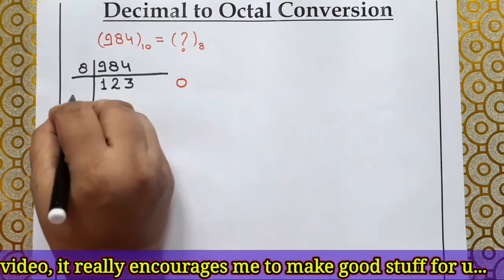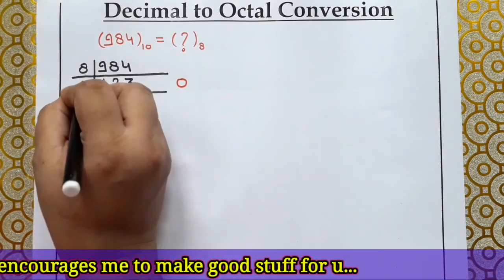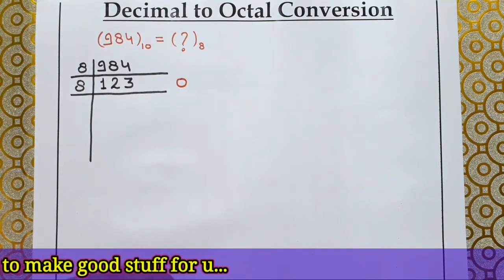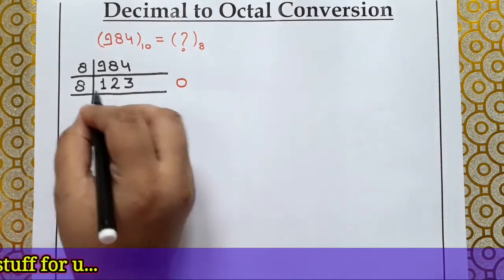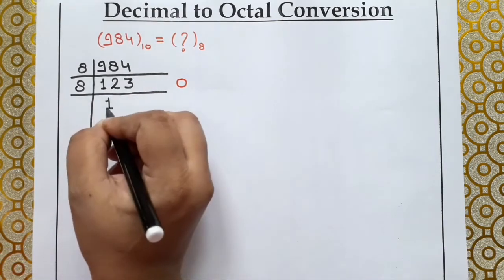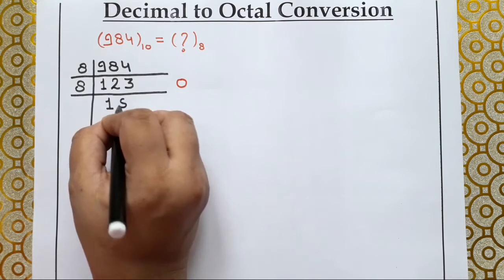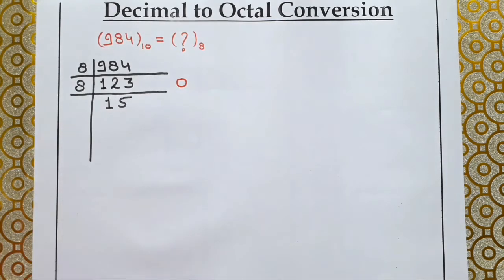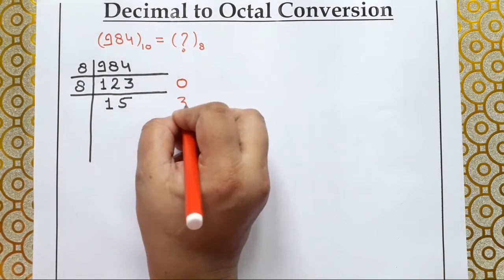Again, we divide this number by 8. We keep dividing the number until it is completely exhausted. So dividing again: 8×1=8 and 8×5=40, so the remainder left is 3.